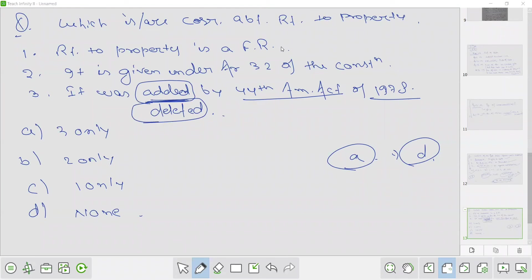Right to property is a fundamental right. Right to property was a fundamental right but it is no more a fundamental right. It is given under Article 32 of the constitution. 32 can give constitutional remedy. It was added by 44th Amendment.